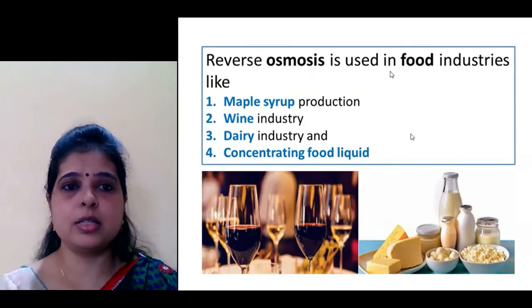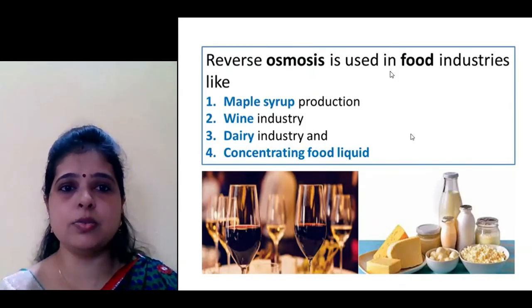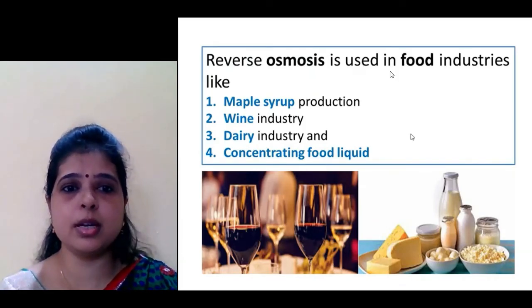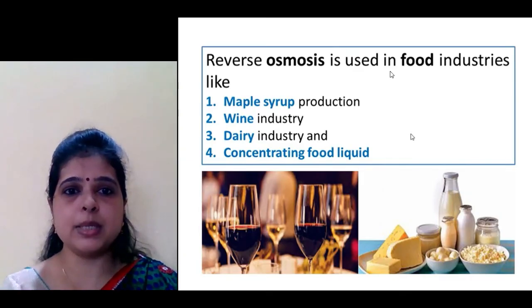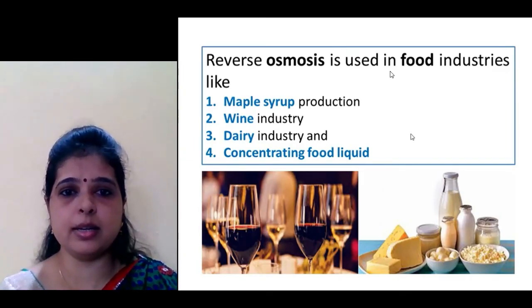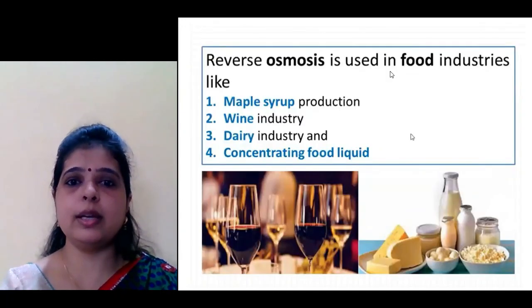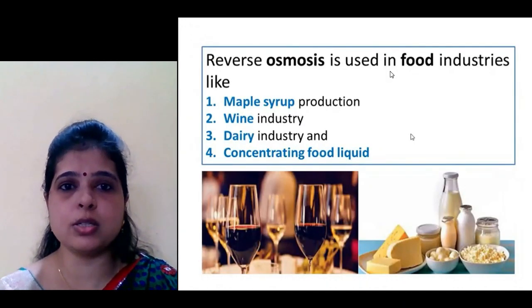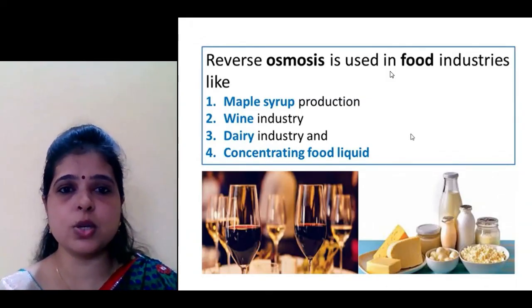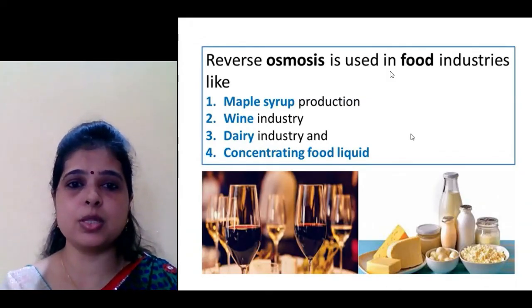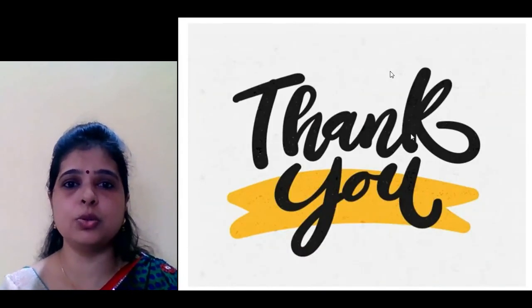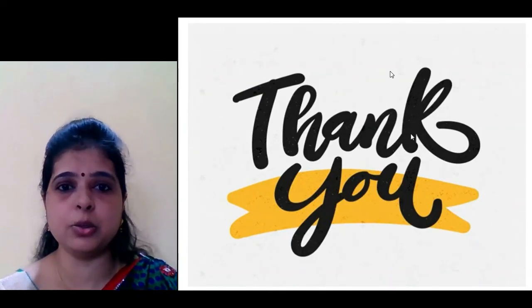Reverse osmosis is used in the food industry in maple syrup production, the wine industry, the dairy industry, and for concentrating food liquids. I think you all now understand what osmosis, reverse osmosis, and the types of osmosis are. Please go through this lecture. Thank you.